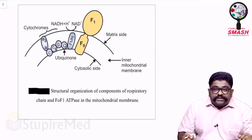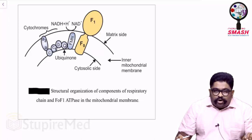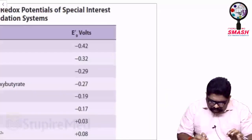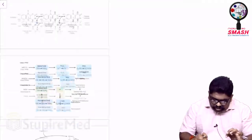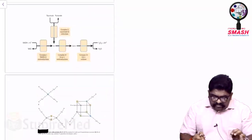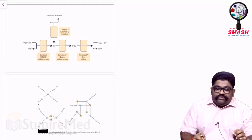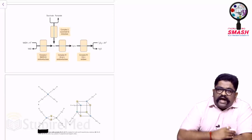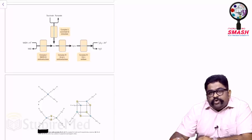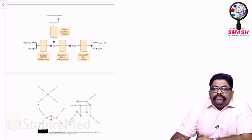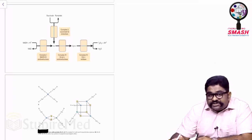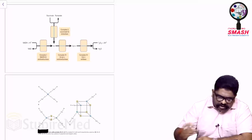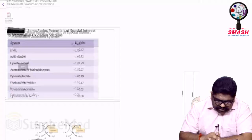When you go for the electron transport chain, focus on its different components — how it starts, where it finishes, and the arrangement of the complexes. The electron transport chain starts from a lower redox potential area and ends up in a higher redox potential area. What do you mean by redox potential? Why is it moving from lower to higher redox area? This brings us to the concepts of oxidation and reduction as processes in biological oxidation.